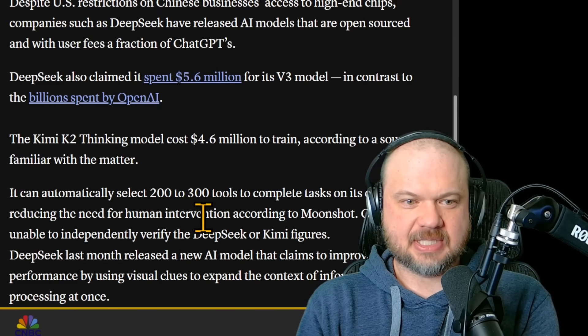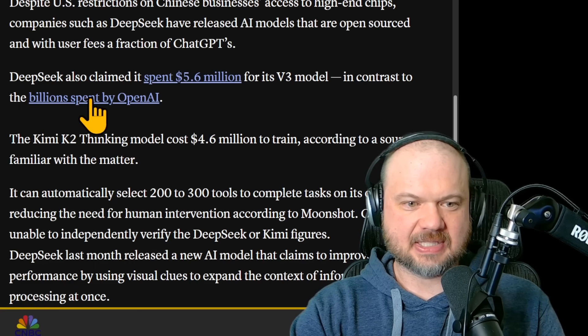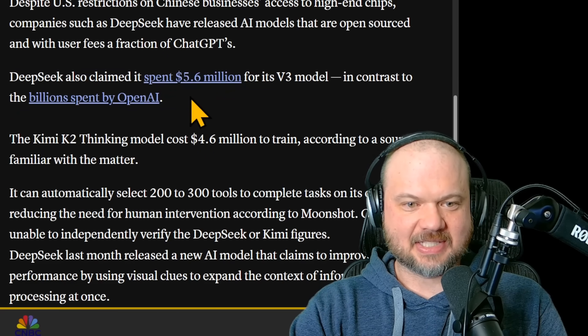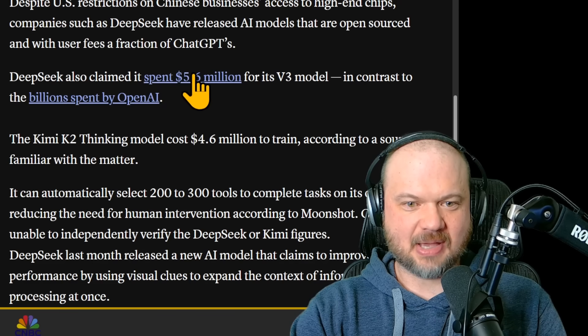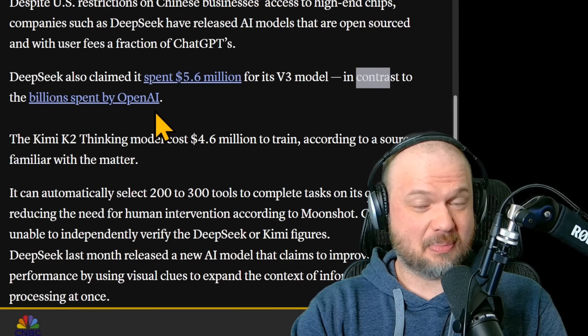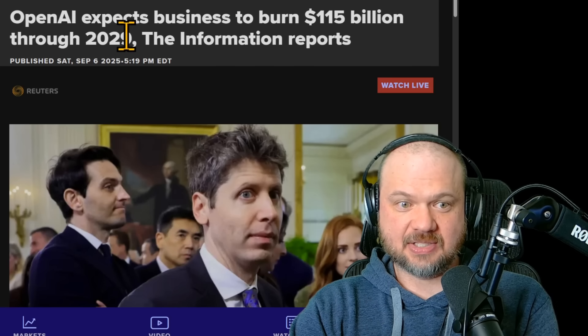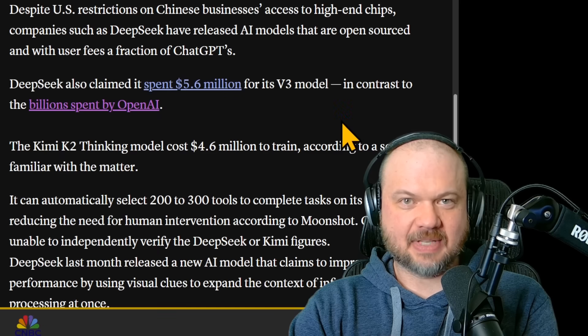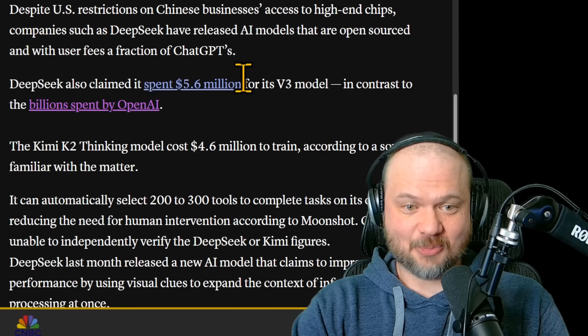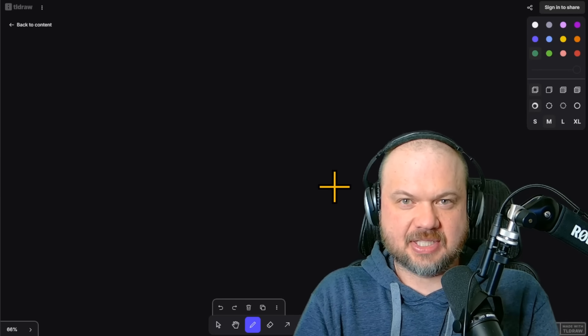So according to this CNBC article, DeepSeek also claimed it spent 5.6 million for its V3 model in contrast to the billions spent by OpenAI. So I mean, this is nonsense. This is not true. I can't believe they would write this because here they're saying that DeepSeek spent this amount for one model, and then they're saying in contrast to billions. So OpenAI did not spend billions on any given model. By the way, this is the article at the link that OpenAI expects to burn billions through some year in the future. That has nothing to do with how much it costs them to train one model. Now, it probably costs a lot more than this, tens of millions, but certainly not billions.